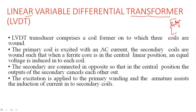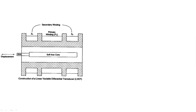The excitation — which is the input — is applied to the primary winding, and the armature assists the induction of current into the secondary coils. Now let's look at the construction of this Linear Variable Differential Transducer.